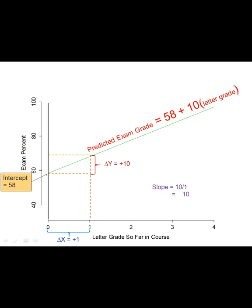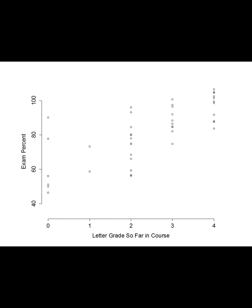In real data we use variable names instead of y and x. So it's 'predicted exam grade equals 58 plus 10x.' Looking at the actual messy data behind the line, some people are not described well — for example, someone with a failing F in the course who got a 90 on the exam is far from the green line. Others close to the line are described well.